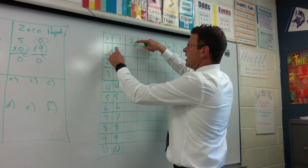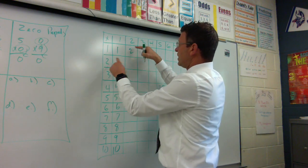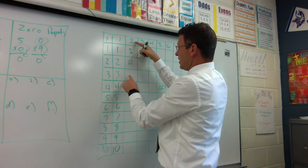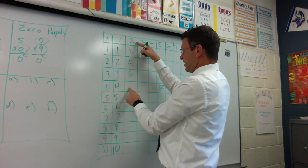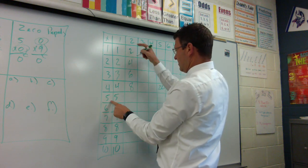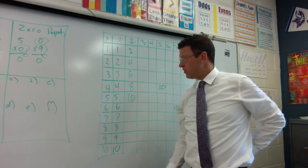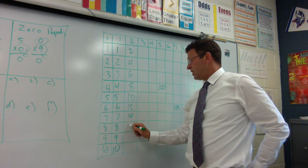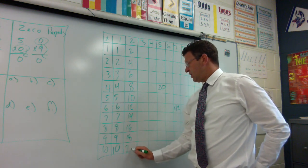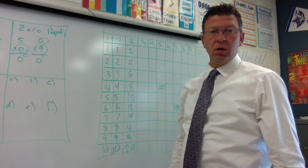Let's take two. Two times one is two, two times two is four, two times three is six, two times four is eight, two times five is ten. Notice we're doing the even numbers. Twelve, fourteen, sixteen, eighteen, twenty.